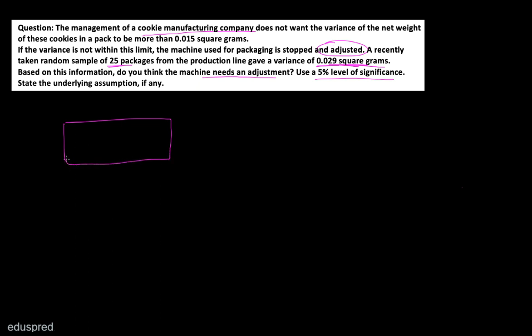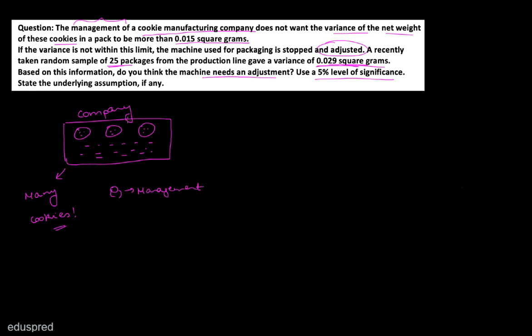Let's understand the information given to us. We are dealing with a cookie manufacturing company with many cookies — there could be thousands. The management does not want the variance of the net weight of these cookies to be more than 0.015 square grams. That means they want the variance to be less than or equal to 0.015 square grams.